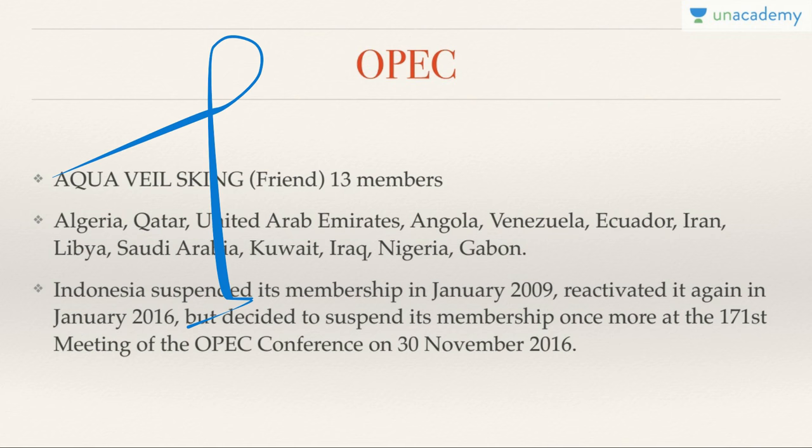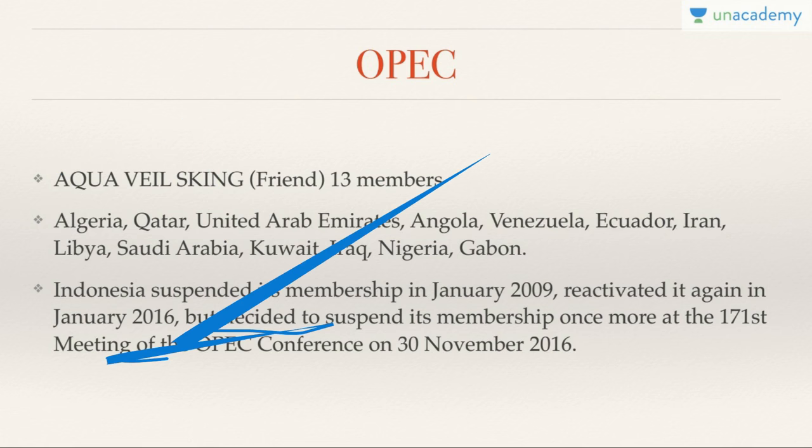The OPEC members in order: A for Algeria, Q for Qatar, U for UAE (United Arab Emirates), A for Angola, then Venezuela, E for Ecuador, I for Iran, L for Libya, S for Saudi Arabia, K for Kuwait, I for Iraq, N for Nigeria, and G for Gabon. These are the 13 current OPEC countries. I hope you've learned a lot — we'll cover remaining organizations in coming videos. Thank you for watching, have an awesome day!